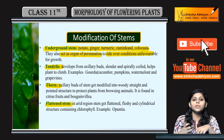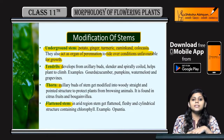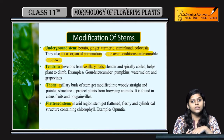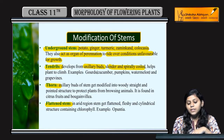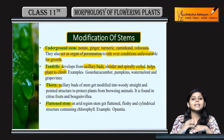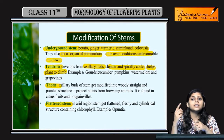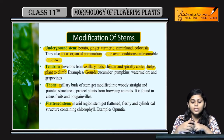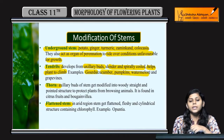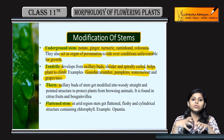Tendrils kya kerti hain - axillary buds se grow kerti hain. They are cylindrical and spirally coiled, help kerti hain plants ko climb karne ke liye. Ye kisi bhi support ko lekar uske around twirl aur swirl kerti hain aur climbing kerti hain. Examples hain is mein aate hain cucumber, pumpkin, watermelon, and grape vines.